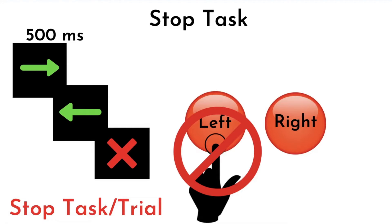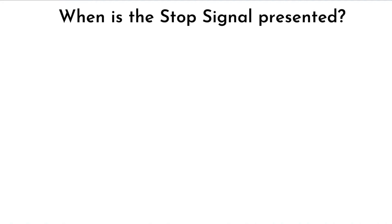Do you see any similarities with the traffic signal example we studied earlier? Post a comment below and let me know. That essentially wraps up the structure of the Stop Signal Task. However, an interesting question you might be thinking about is: when — that is, after how long — is the Stop signal presented, and how often is it presented? All good questions. Let's find out.